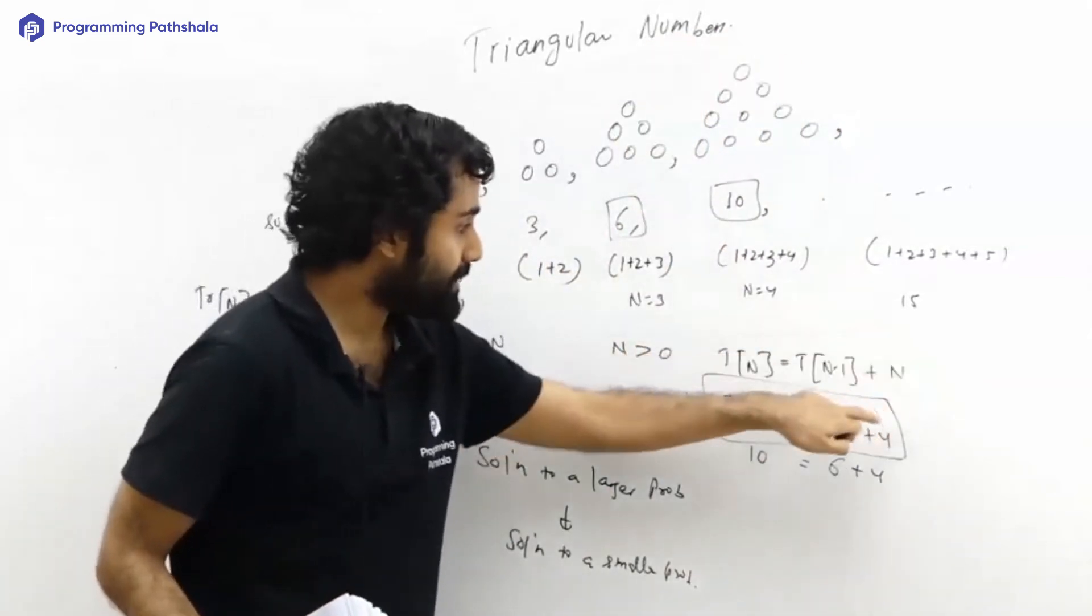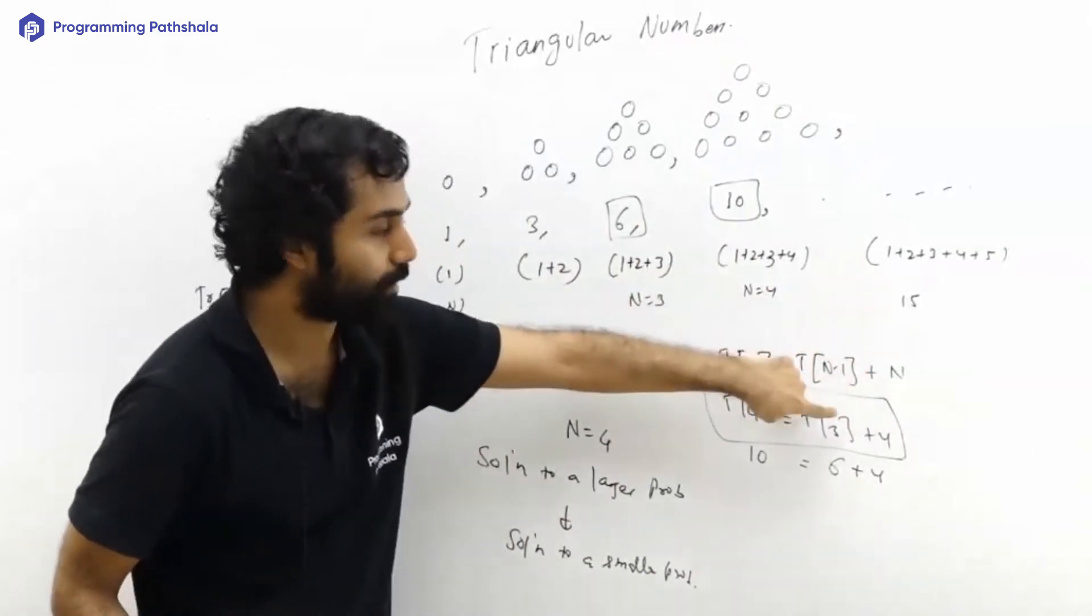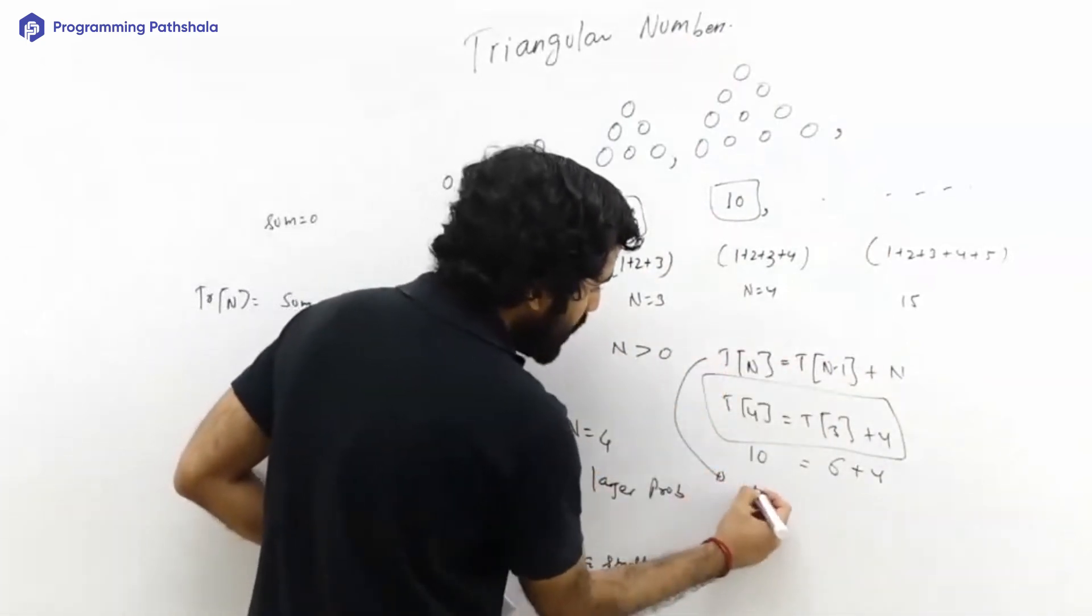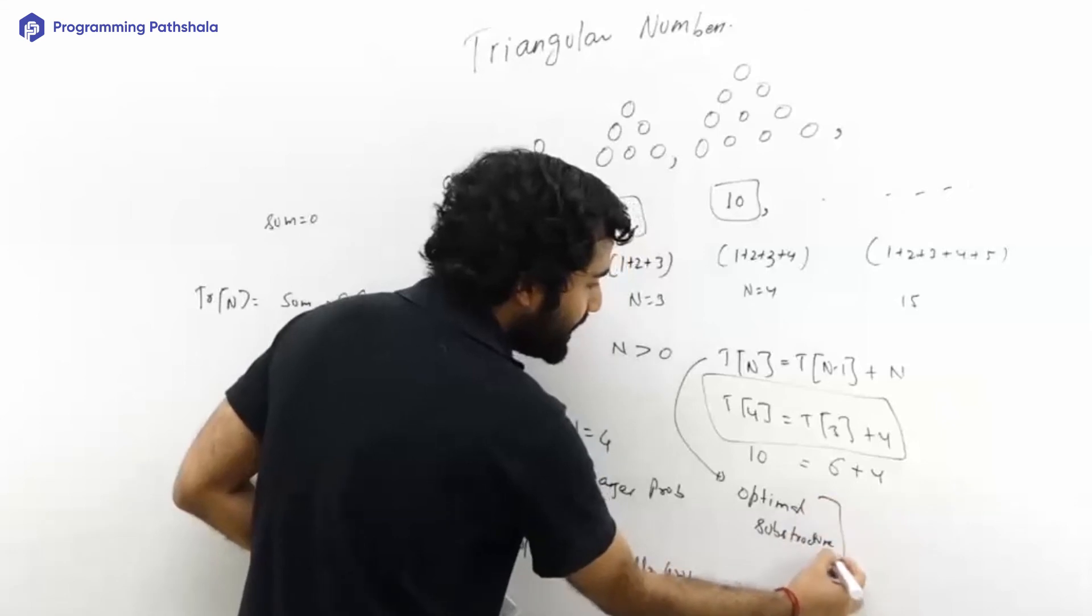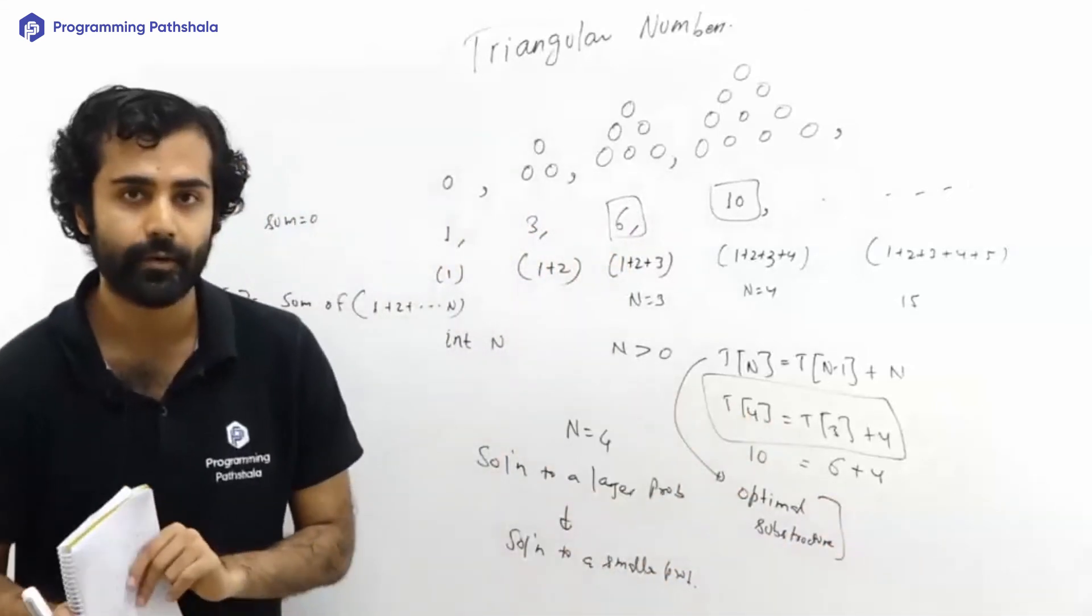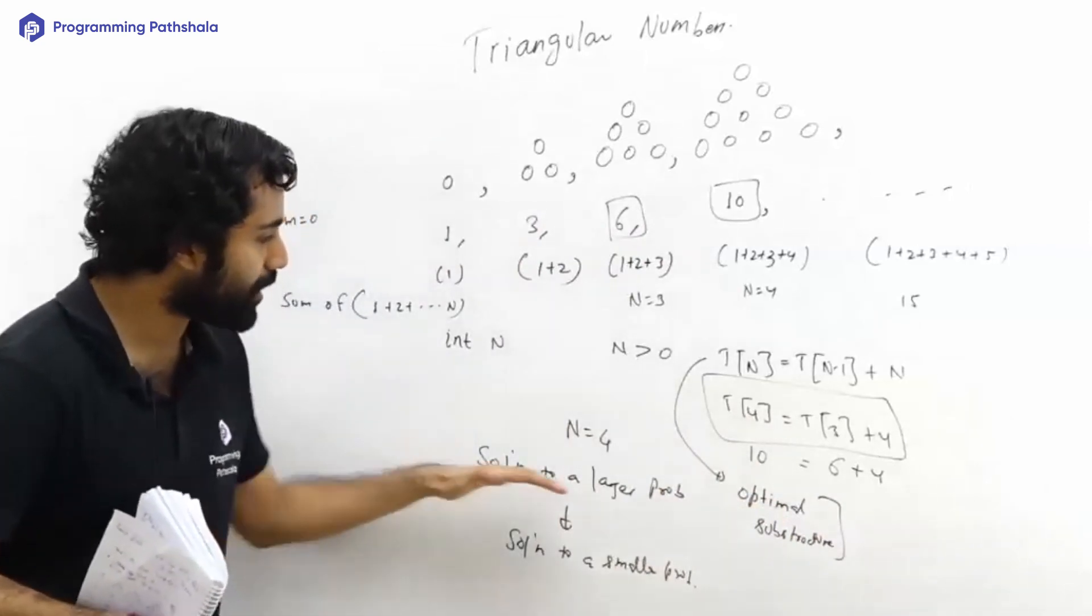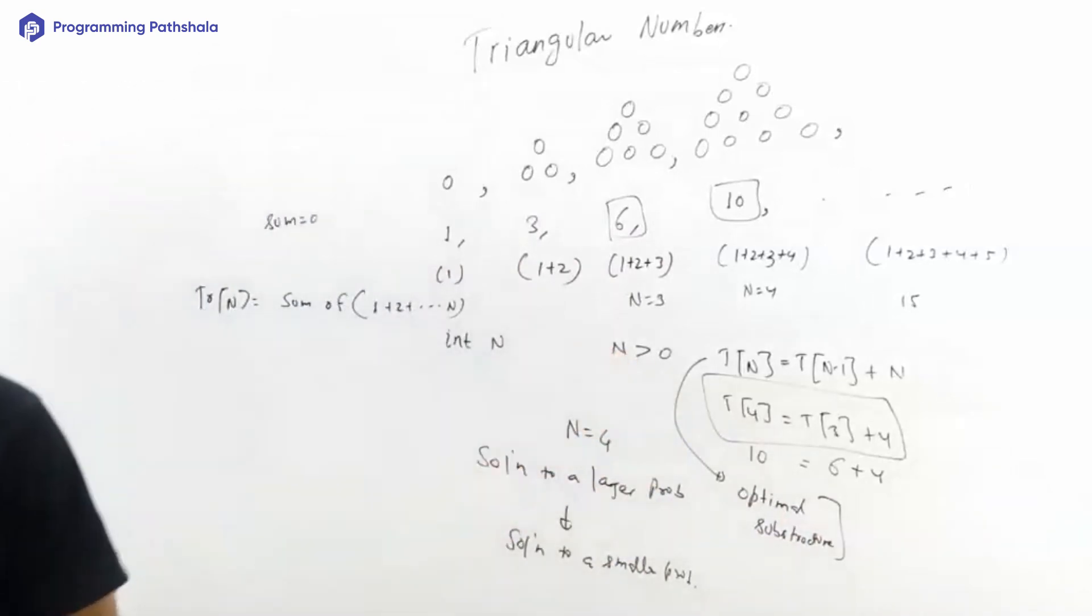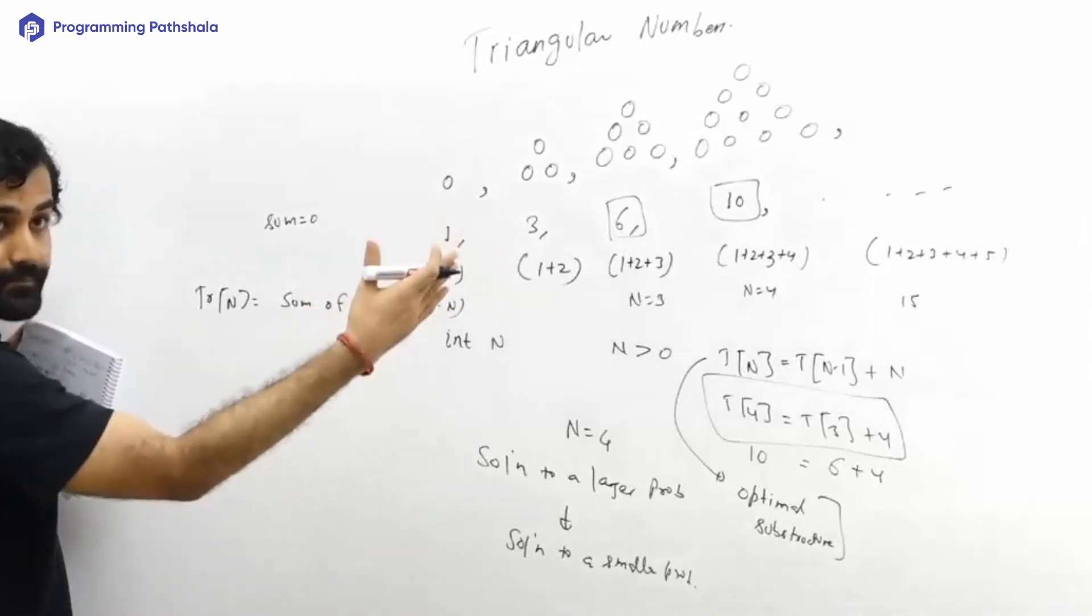This kind of equation is completely consistent with it because it is saying that a higher triangular number is a function of a lower triangular number. This is called, in the language of DP, as optimal substructure. It's good that you remember this term because you will be hearing it again and again everywhere. What is optimal substructure? Just an equation that relates solution of a larger problem to a solution of a smaller sub problem.